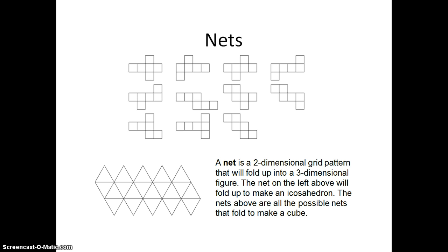The nets above are the eleven possible patterns that will fold up to make a cube. The net to the left will fold up and make an icosahedron.